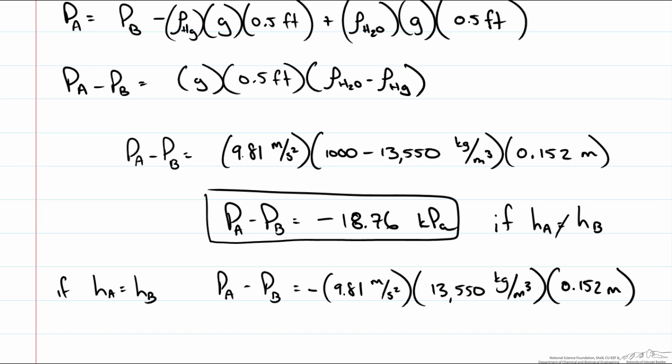Remember this is negative since we know the pressure in B is greater. This gives us a pressure differential of negative 20.2 kilopascals. Now does this make sense?